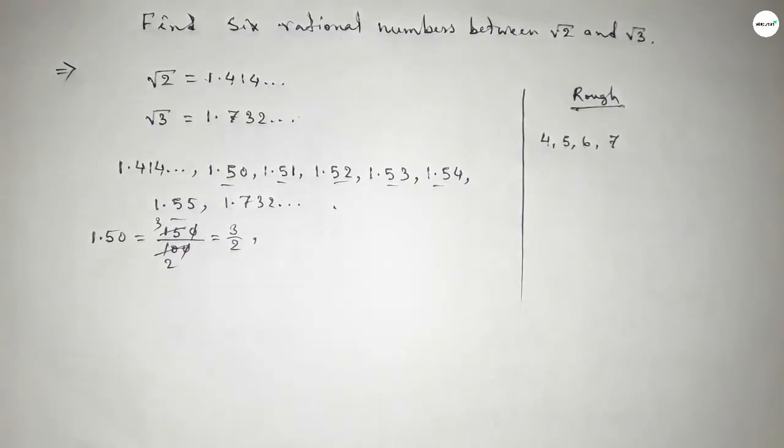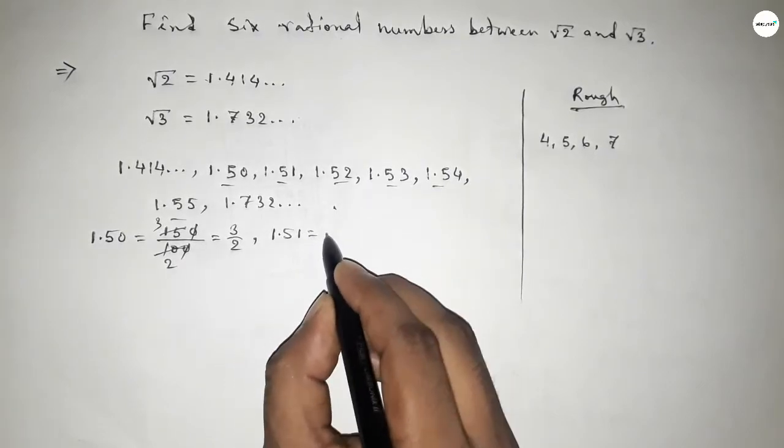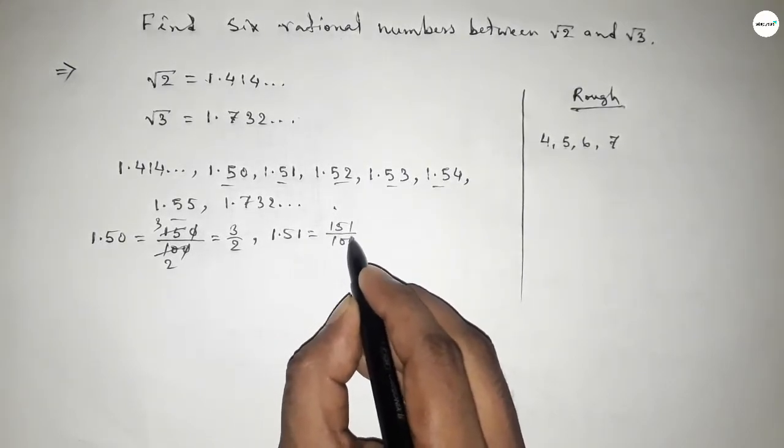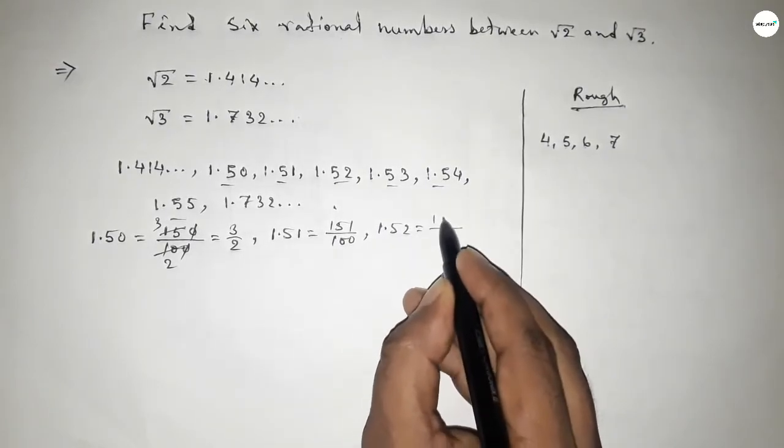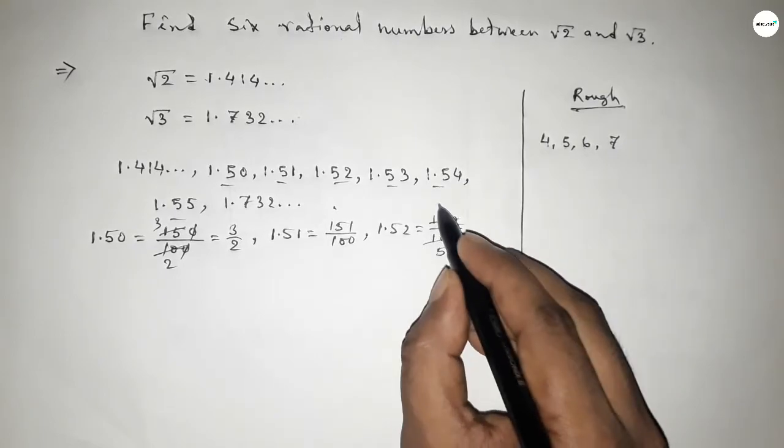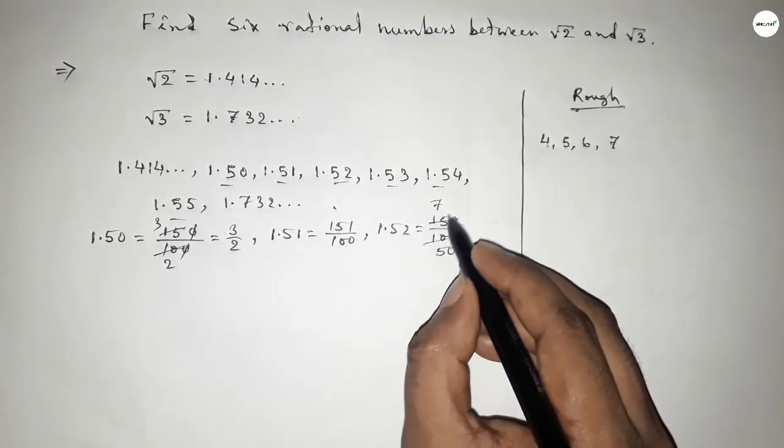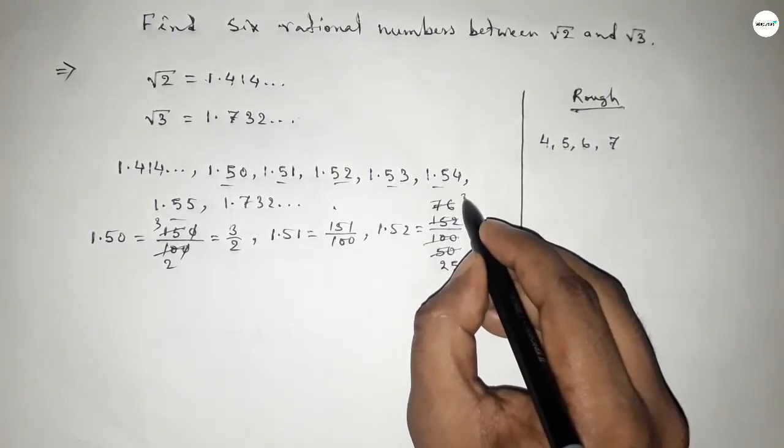Next, one point five two equals 152 over 100. Now if you divide both numbers by two, then again divide by two, this is 38 over 25.